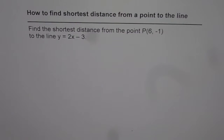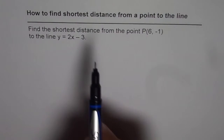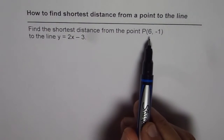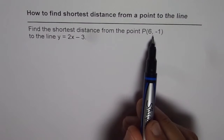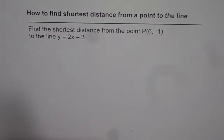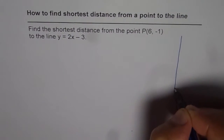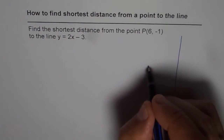Let us now understand how to find the shortest distance from a point to a given line. We will do it with the help of an example. The question is: find the shortest distance from the point P, which is (6, –1), to the line y = 2x – 3. Let me make a sketch of this and then we will discuss the solution.